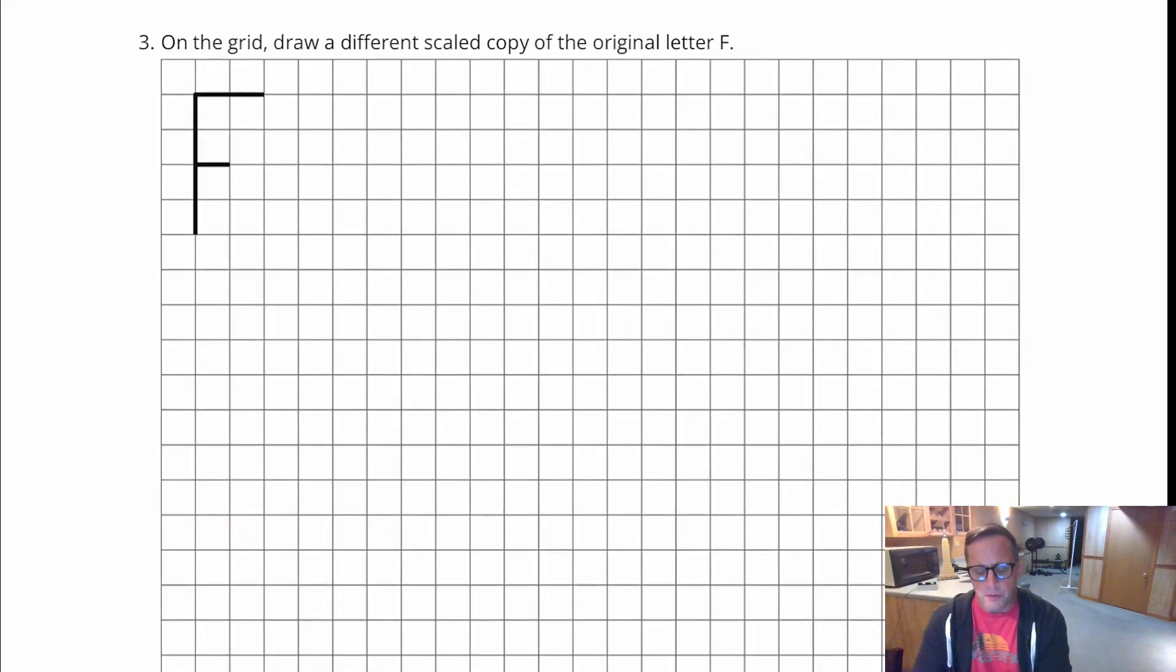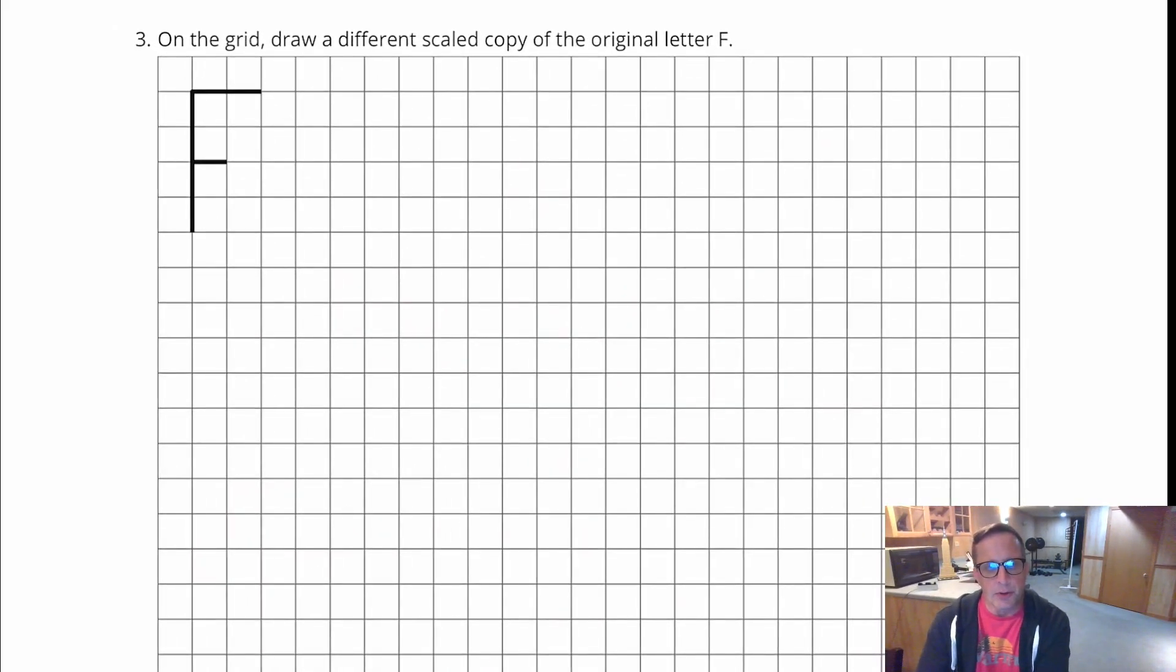Now for part three here, this is kind of up to you to draw, make your own drawing that is a scale copy of the letter F. And all you have to do is just keep in mind that, I'm just drawing a random length right here. And that's going to be one, two, three, four, five, six, seven, eight, nine, ten. That's ten tall. So if that's ten, then I need to make the very top of it five. So one, two, three, four, five.